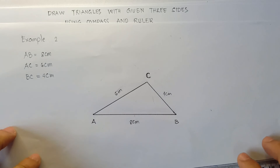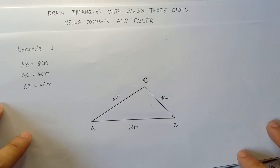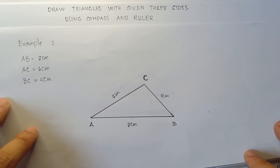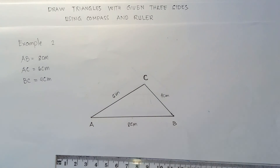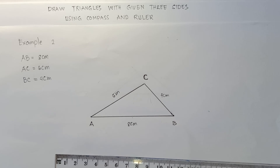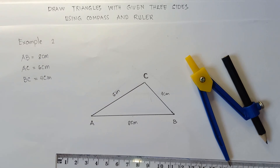That's it, guys — all set! So that's how you draw triangles given three sides using the compass and the ruler. I hope you learned something new today. If you like this video, do not forget to like, share, and subscribe. Share it to your friends and classmates so that we can help more students. Once again, this is Teacher MJ. You have a great day, class. Goodbye for now, bye-bye!